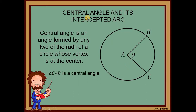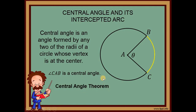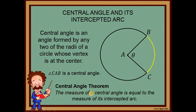Next, what is the intercepted arc? The intercepted arc is the arc that is 'eaten' by the angle — in this case, it is arc BC. The central angle theorem states that the measure of the central angle is equal to the measure of its intercepted arc. So if the arc is 90 degrees, the angle is 90 degrees. If the arc is 80, the angle is 80 degrees, and so on.